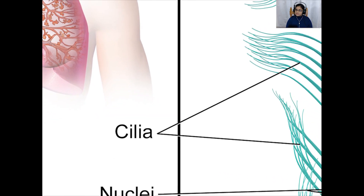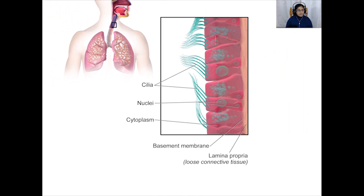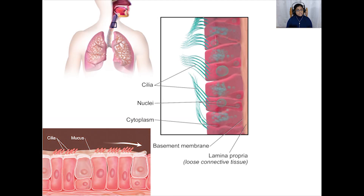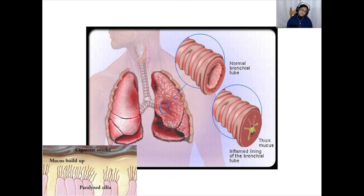The trachea and larger airways are lined with cells that play an important role in keeping the airways clean. Some cells secrete a sticky liquid called mucus, which traps particles of dirt or bacteria present when we breathe in. Other cells are covered with tiny hair-like structures called cilia. Cilia beat backwards and forwards, sweeping mucus and trapped particles out towards the mouth, preventing dirt and bacteria from entering the lungs where they might cause infection. One effect of smoking is that it destroys the cilia and stops this protection mechanism from working properly.